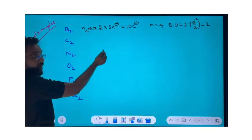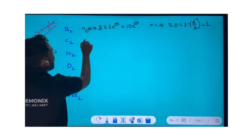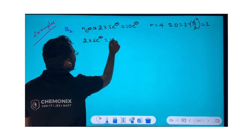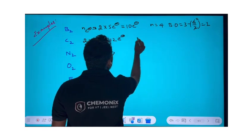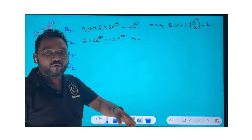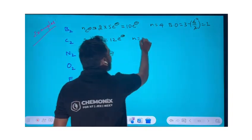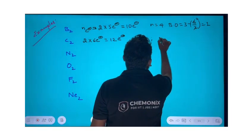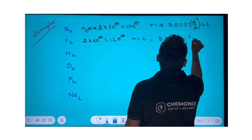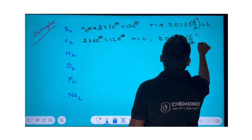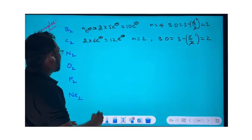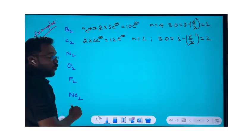For C₂: there are two carbon atoms, 2 × 6 = 12 electrons total. The difference from 14 is: 14 − 12 = 2, so n = 2. Therefore, bond order = 3 − (2/2) = 3 − 1 = 2. See how fast you can solve this!